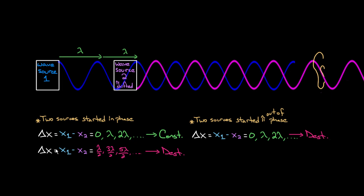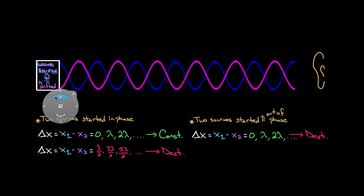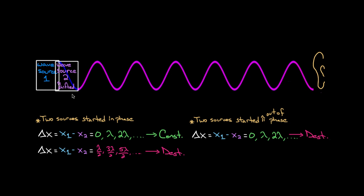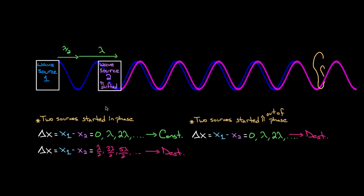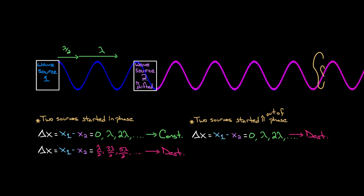What do path length differences of half-integer wavelengths give us now? Moving the pi-shifted source forward half a wavelength gives constructive instead of destructive. Moving it so wave source one travels one and a half wavelengths further than wave source two — three halves wavelengths — the peaks are lining up perfectly, giving constructive interference again. All these half-integer wavelength path length differences, instead of giving destructive, are giving constructive because one of these wave sources was pi-shifted compared to the other. These two ideas are the foundation of almost all interference patterns you find in the universe.